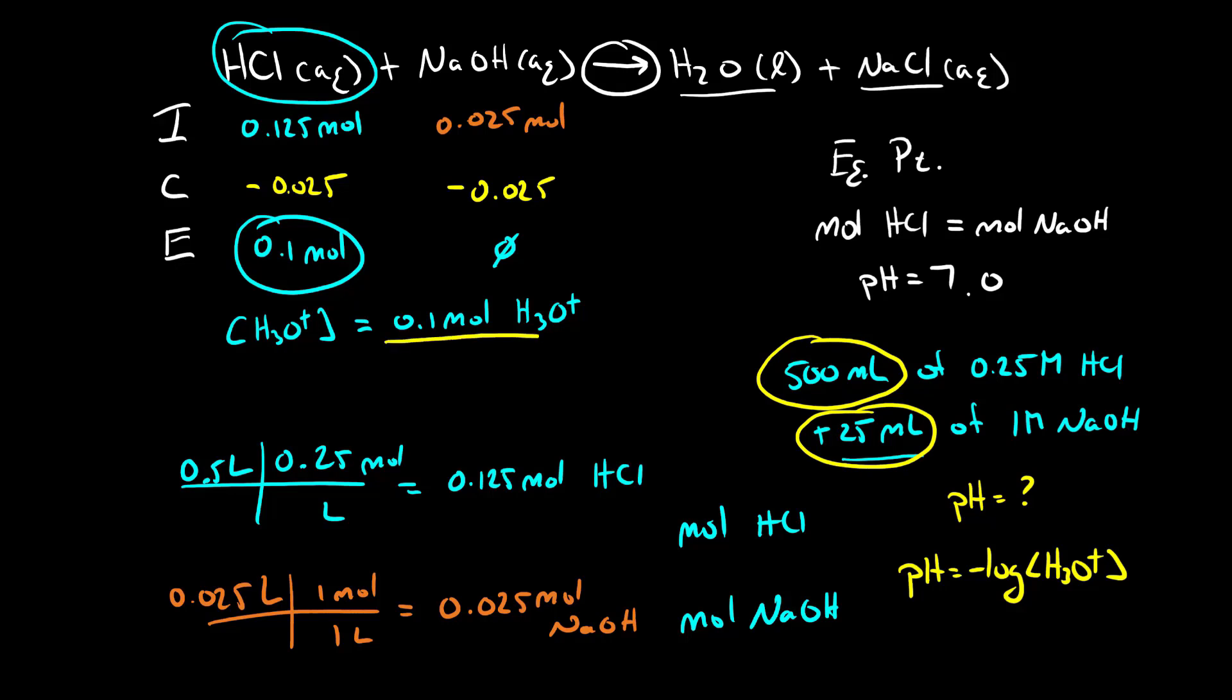Our total volume here is 0.5 liters plus the 0.025 liters we've added. So the concentration of hydronium which is equal to the concentration of hydrochloric acid we have left over is going to be 0.1 divided by 0.525 liters. This gives me 0.19 molar hydrochloric acid.